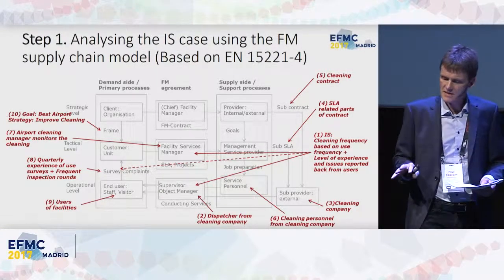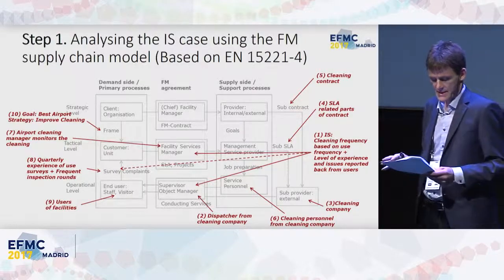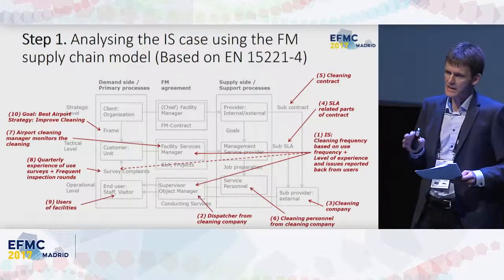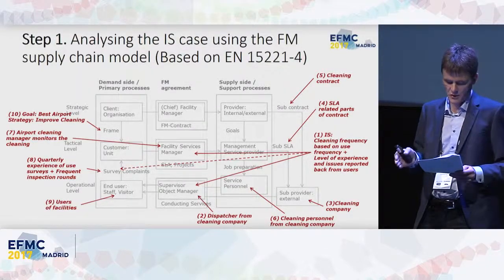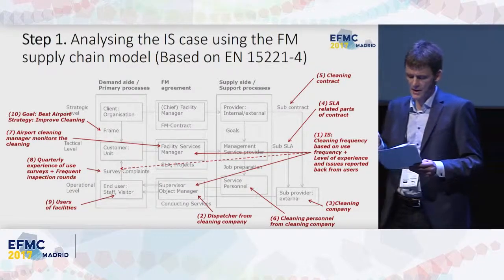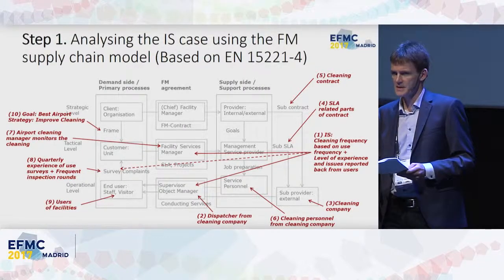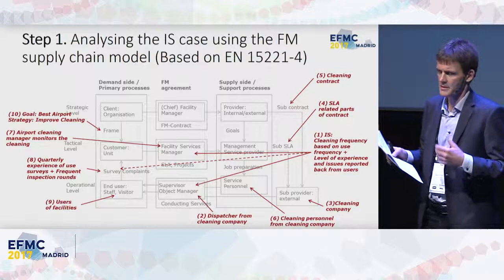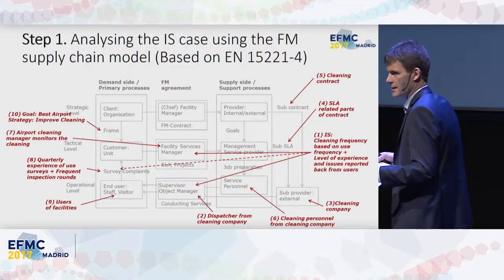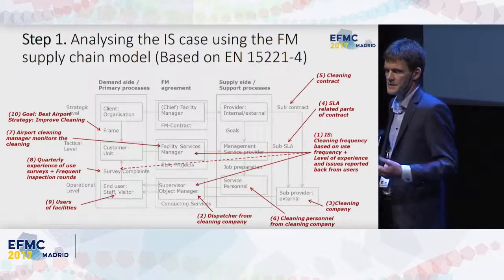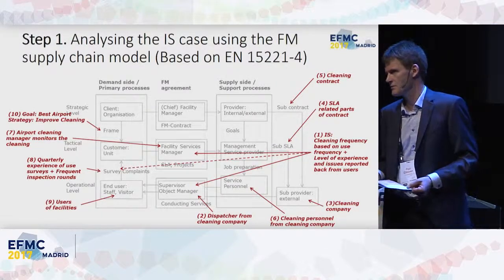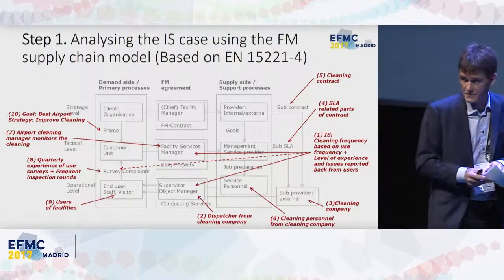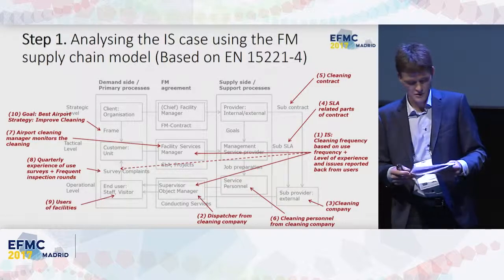One thing this does not show is that the use of the IS to support the cleaning process is aligned with the strategy of improving cleaning and thereby contributing to the goal of being the best airport. The airport management has a goal of becoming the best airport, at least in Europe, and one of the strategies is to improve the facilities — this IS use is aligned with that strategy. We cannot directly see that from this figure; we need some other kind of illustration.